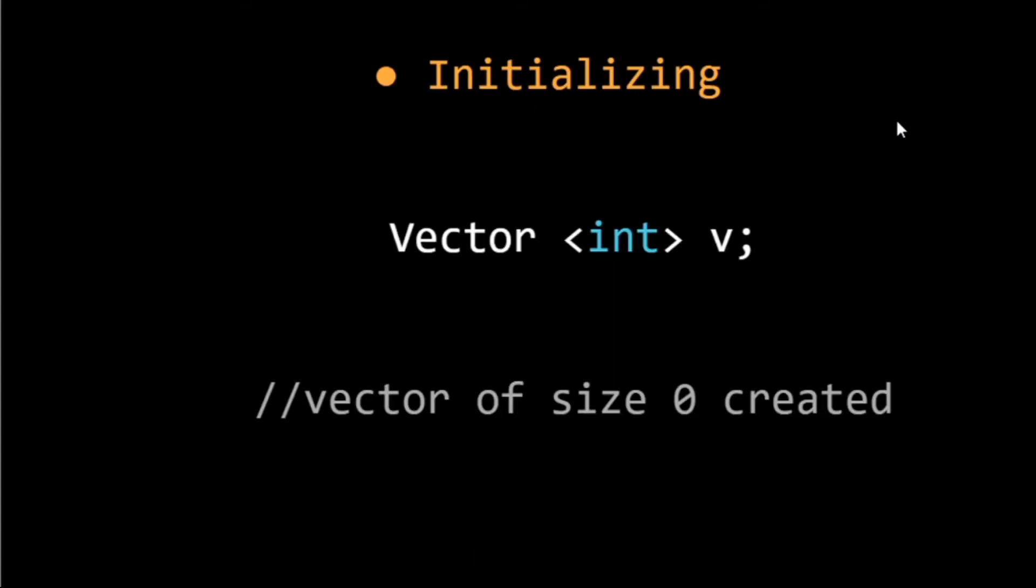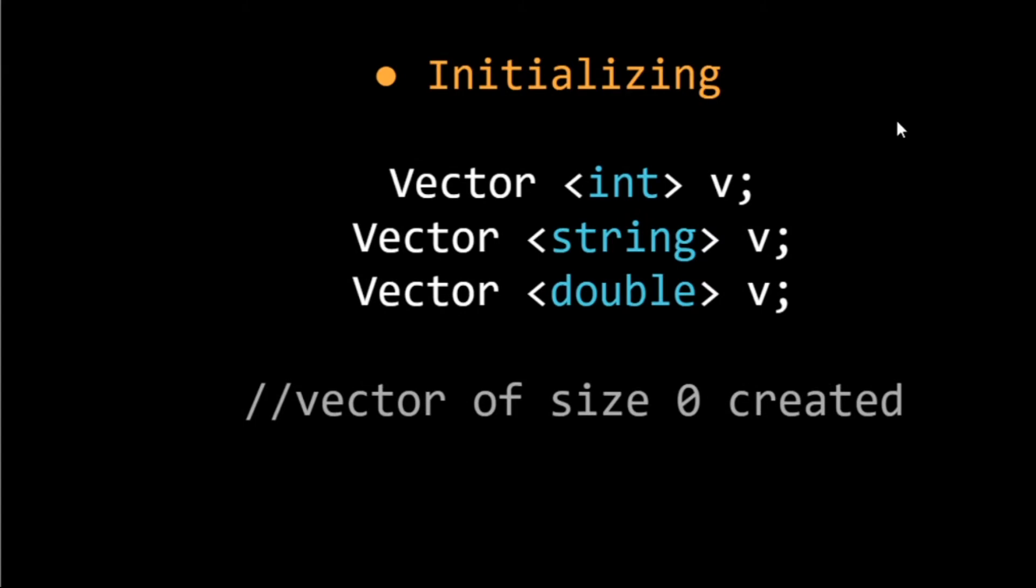These are the functions that we are going to discuss. So let's start. First, for initializing a vector, we use this syntax. Here we are writing Vector <int> v. This means that we are initializing a vector that is of data type int and its name is v. By writing this, we have initialized a vector of zero size. We can give different data types like string or double.